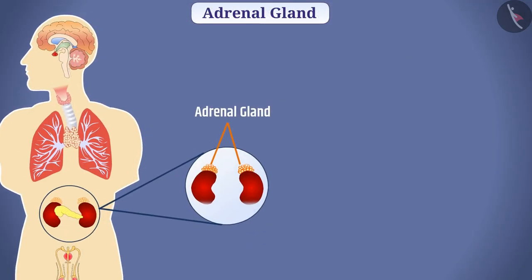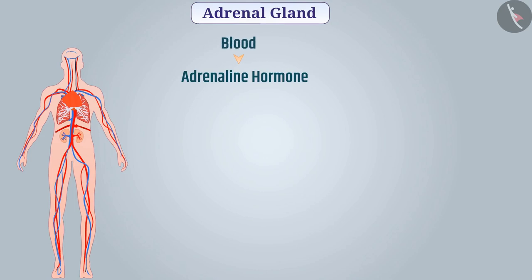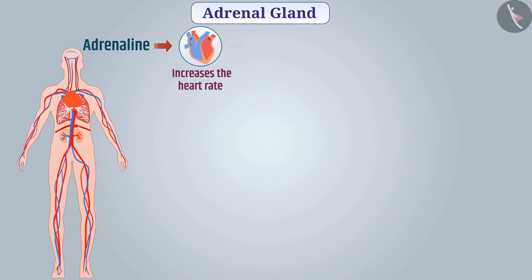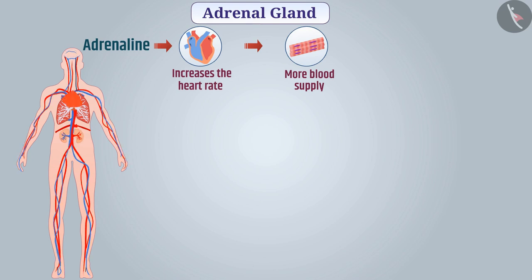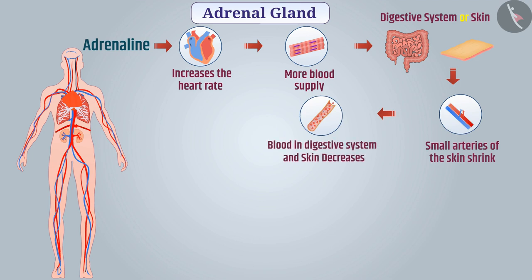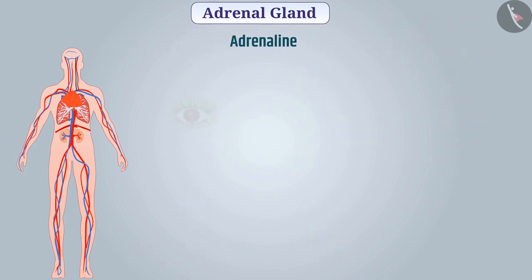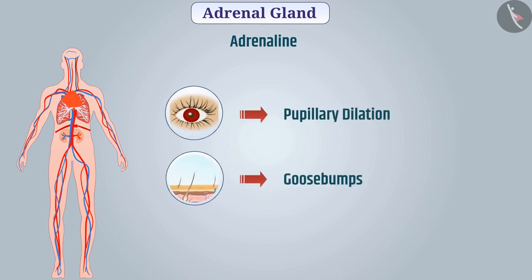An adrenal gland is present above each kidney and secretes adrenaline hormone into the blood. Adrenaline reaches the heart and various parts of the body through blood, increasing the heart rate, which results in more blood supply to the muscles and more oxygen reaching them. In the presence of adrenaline, muscles around the digestive system and the small arteries of the skin shrink, decreasing blood supply to those areas and directing more blood to skeletal muscles.